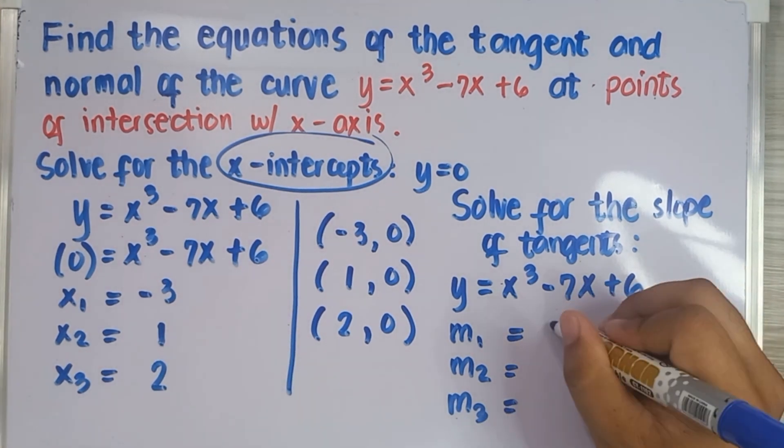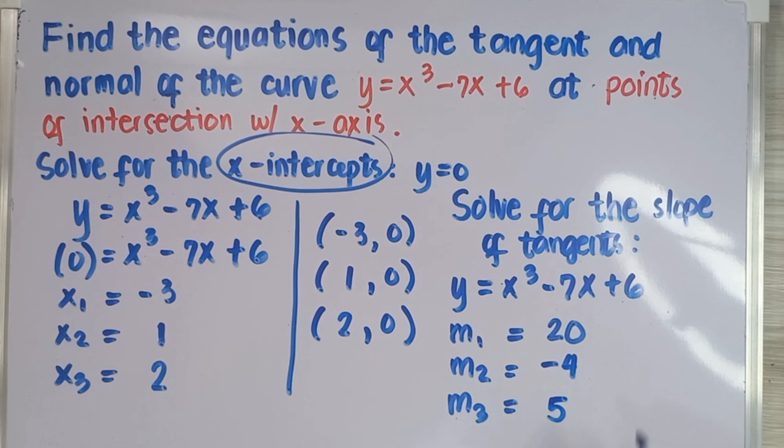The slopes are 20, negative 4, and 5. Wow, you did it! Good job!